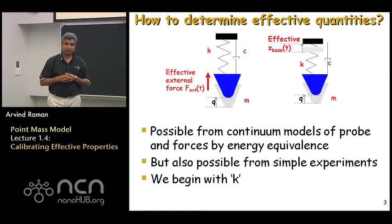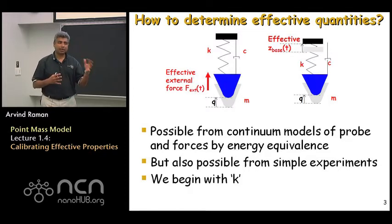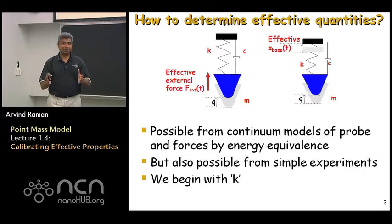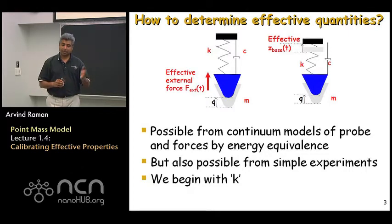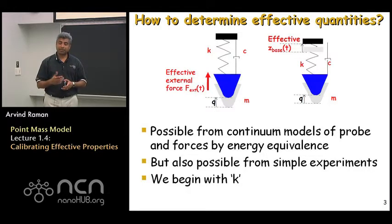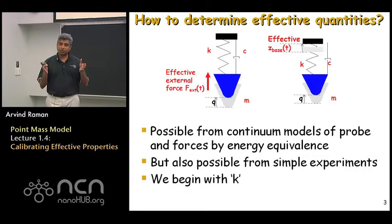What we will focus on today is that when we deal with directly excited cantilevers or with dither piezo excited cantilevers, there is a correct point mass oscillator model for each of these situations that correctly captures the motion of the probe tip. We need to know the motion of the probe tip because it is through that motion that we measure the interaction forces between the tip and the sample. On the left is the point mass oscillator model for directly excited cantilevers, where all the quantities in red are effective quantities that we need to determine. On the right is an example of a dither piezo excited cantilever, where Z_base is an effective value based on an energy principle that ensures this model gives exactly the same tip motion as the real probe.